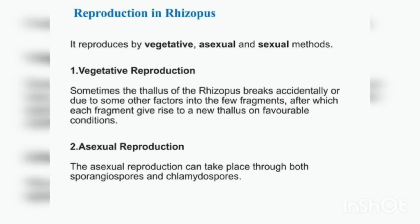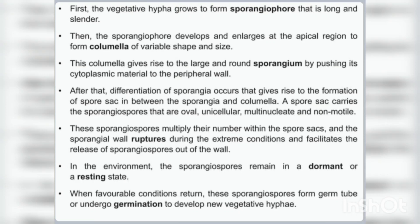The reproductive hyphae form the reproductive structures. Reproduction occurs by three means: vegetative, asexual, and sexual. Vegetative reproduction is by fragmentation — when fragments of Rhizopus fall on a substratum, they give rise to new mycelium. Asexual reproduction is by the formation of sporangiophores. The vegetative hyphae grow to form a sporangiophore that is long and slender. The sporangiophore develops and enlarges at the apical region to form a columella of variable shape and size, which gives rise to a large round sporangium by pushing cytoplasmic material to the peripheral wall.